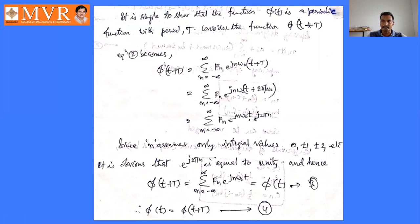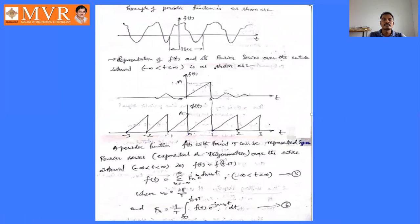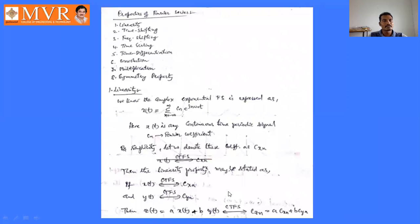Next we'll see some examples of periodic functions, their Fourier series representation, and the relation between periodic functions and Fourier coefficients. After that, we find the properties of the Fourier series. There are eight properties: linearity, time shifting, frequency shifting, time scaling, time differentiation, convolution, multiplication, and the symmetry property. These are very important — they are most frequently asked exam questions.